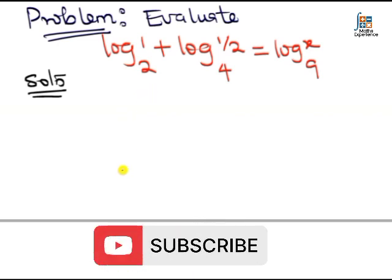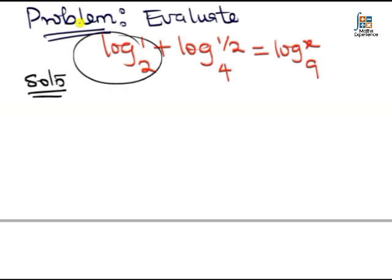one to the base of two plus the log of half to the base of four equal to the log of x to the base of nine. Okay, so now the first one here, of course, it is easy to see